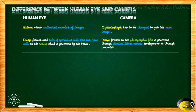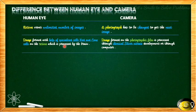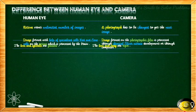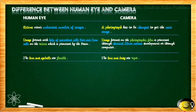The fourth difference is that in the human eye, the image is formed with the help of specialized rod and cone cells on the retina, and this image is processed by the brain. In the camera, the image is formed through a chemical — silver nitrate — or it can be developed through a computer.